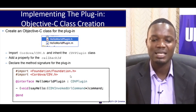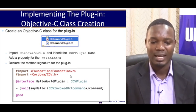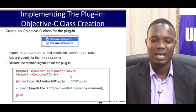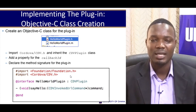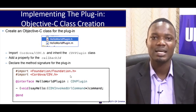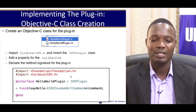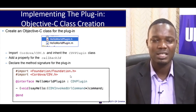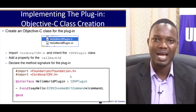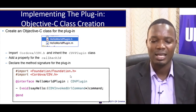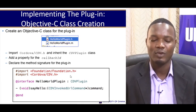We need to create an Objective-C class for the plugin. In doing this we need to import a particular header file, which is the Cordova CDV header file, and then we need to inherit the CDVPlugin class. After doing that we need to add a property for the callback ID, and then finally declare the method signature for that plugin.